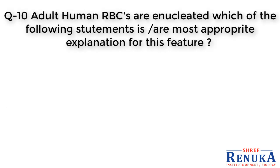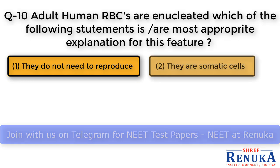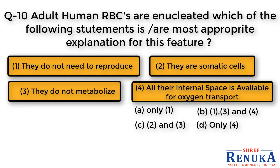Question 10: Adult human RBCs are enucleated. Which of the following statements is the most appropriate explanation for this feature? Looking at option 2 — they are somatic cells — this is not an appropriate explanation, as somatic cells are nucleated and this is not the reason for the enucleated condition in RBCs. Option 3 — they do not metabolize — is also not appropriate, as RBCs are mainly concerned with transport of O₂ and CO₂, and metabolic activities are still carried out.